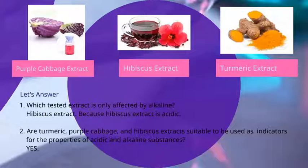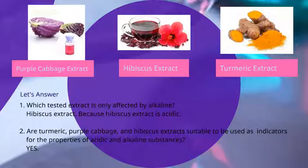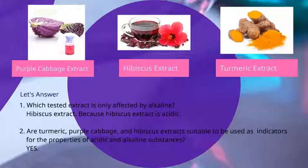Let's look at the answer column. Number one: which tested extract is only affected by alkaline? The hibiscus extract is used to identify acidic substances only. Number two: are turmeric, purple cabbage and hibiscus extract suitable to be used as indicators for the properties of acidic and alkaline substances? Yes, because these three extracts can be used as litmus paper substitutes.